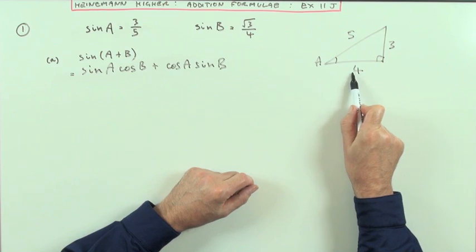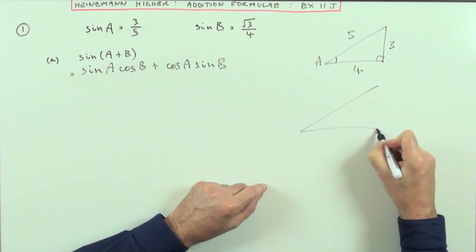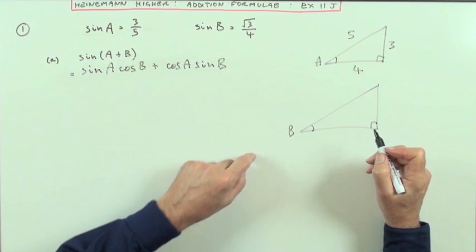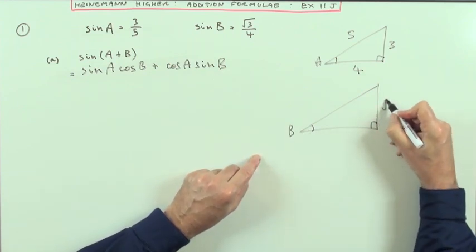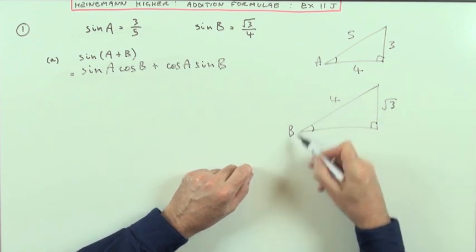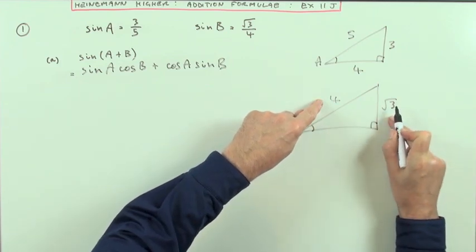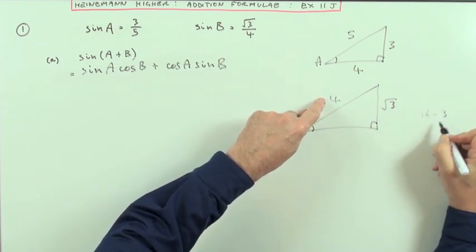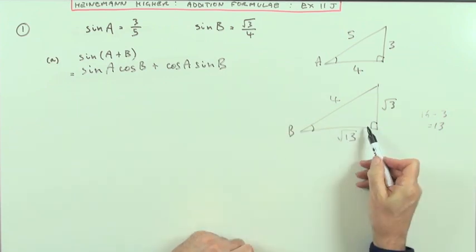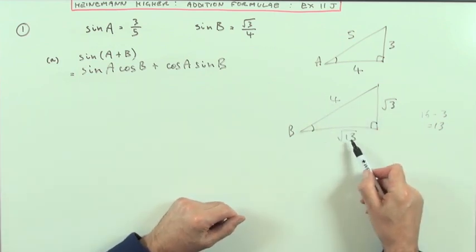You could do the same with B. I could draw that triangle at the side. If for angle B the sine is √3/4, that means the opposite side is √3 and the hypotenuse is 4. A bit more Pythagoras to do here: to find this side it would have to be 4² - (√3)² = 16 - 3 = 13, which makes this √13. And again, as soon as I've done that in that triangle I know everything I want: sin = √3/4, cos = √13/4, tan = √3/√13.